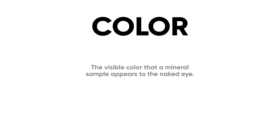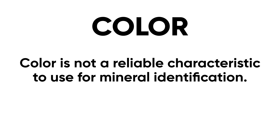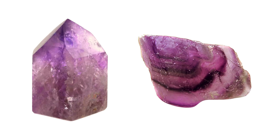Let's begin by looking at color. Color is the visible color that a mineral appears to the naked eye — what do you see when you actually look at the sample? It's important to note that color is generally not a reliable characteristic to use for identification. For example, these two mineral samples look very similar — their colors are almost identical purples — but the one on the left is quartz and on the right is fluorite. So if multiple minerals appear in the same color, color might not be the best characteristic to use for identification.